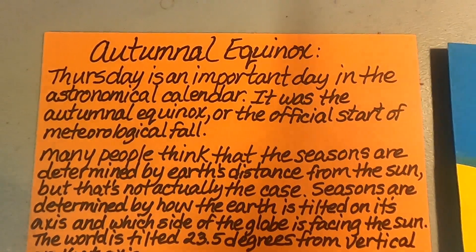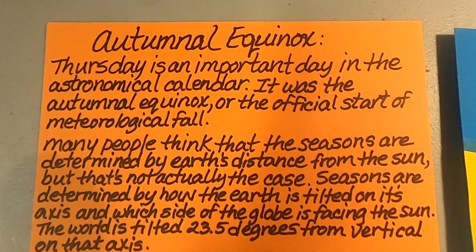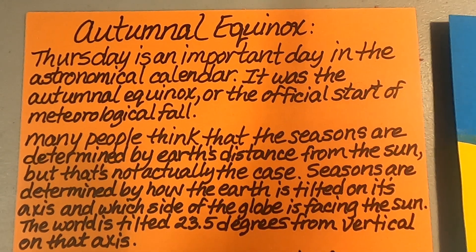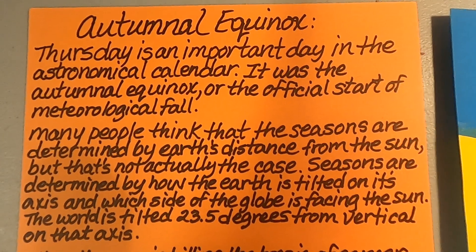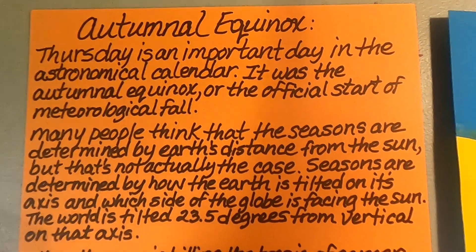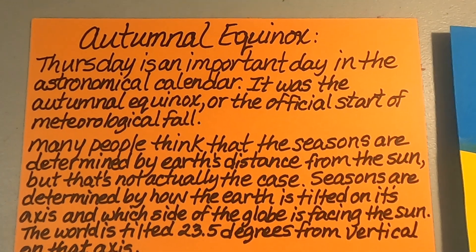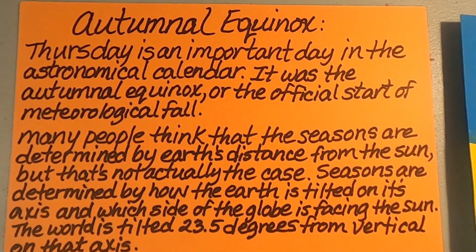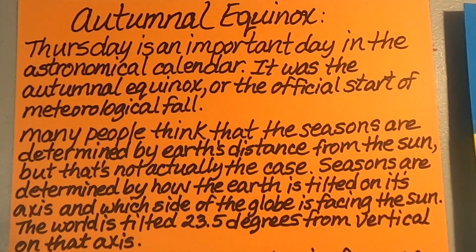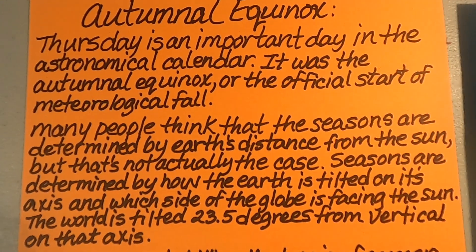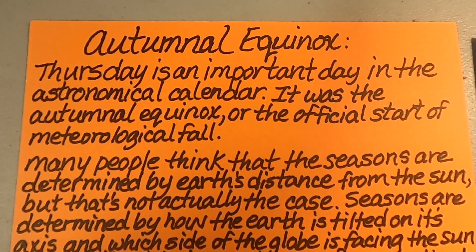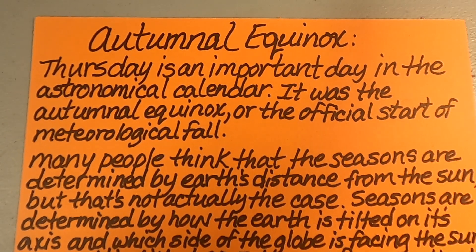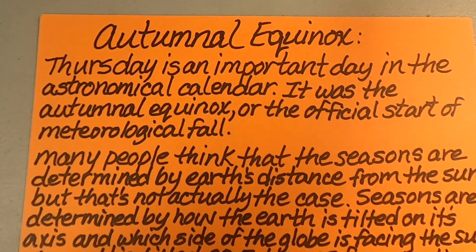This is Navajo Grandma. I wanted to explain to you what is happening right now outside. We are having the autumnal equinox, and what Grandma will explain to you is that Thursday, which is almost finished, is an important day in the astronomical calendar — it was the autumnal equinox, or the official start of meteorological fall.